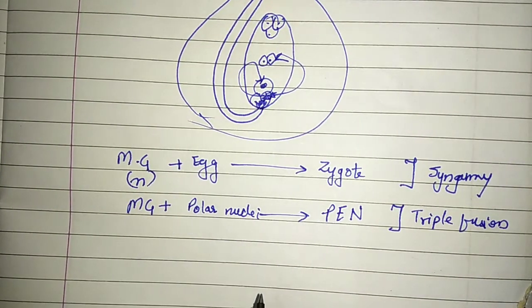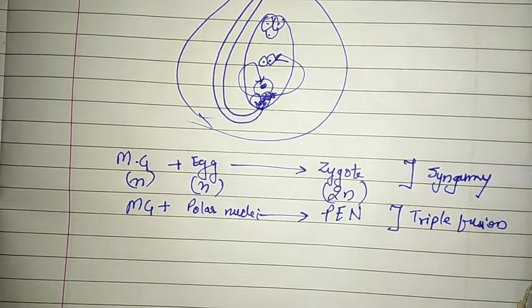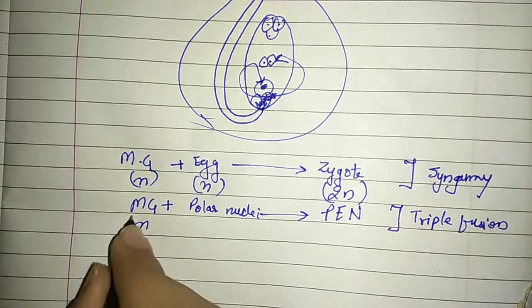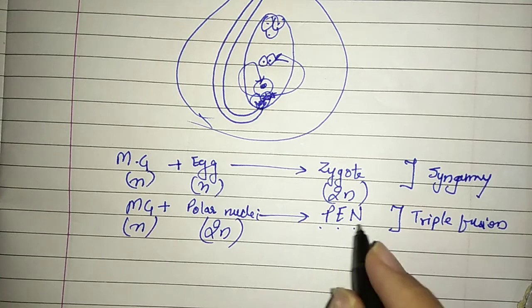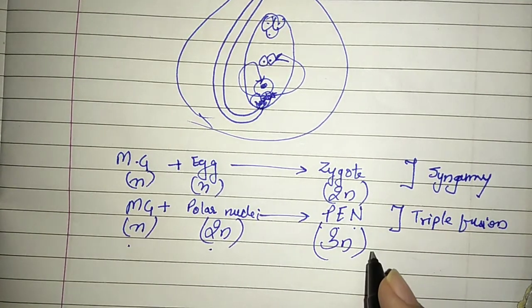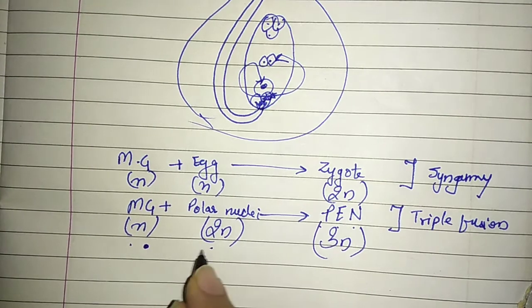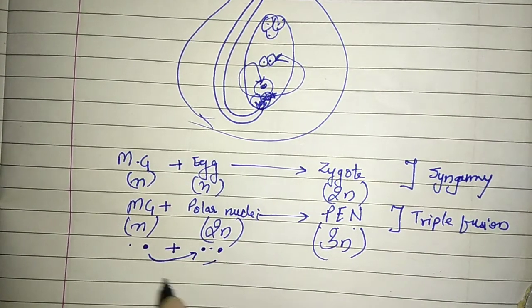Why triple fusion? Male gamete is haploid, female gamete is haploid, so the zygote will be diploid. Male gamete is haploid, polar nuclei is diploid, so the primary endosperm nucleus will be 3n. Here fertilization of three nuclei, fusion of three nuclei takes place, so it is known as triple fusion.